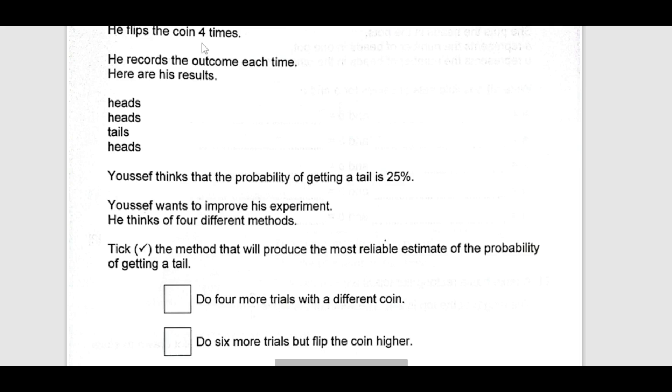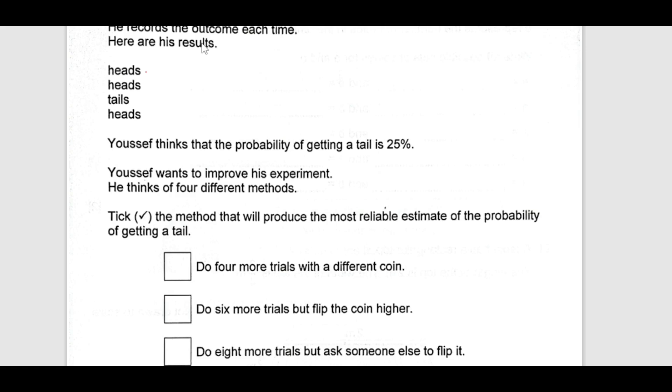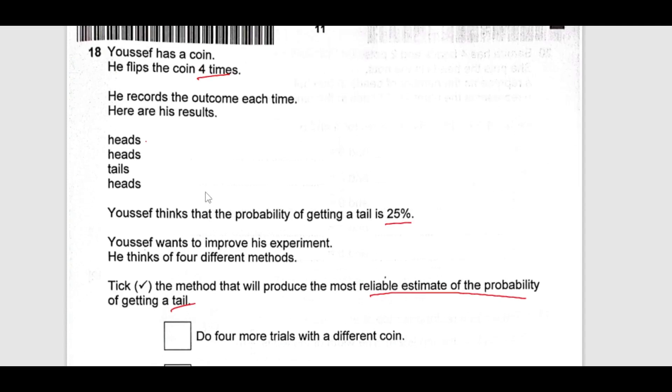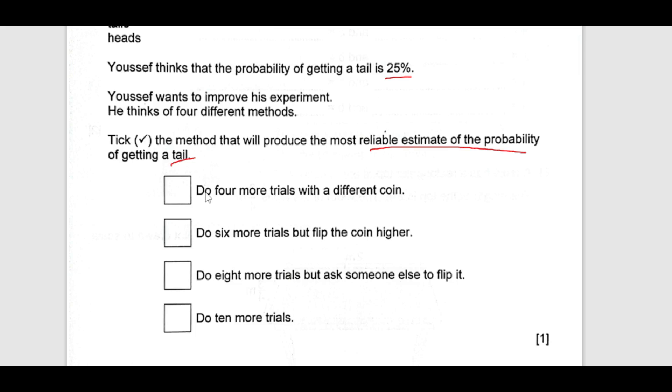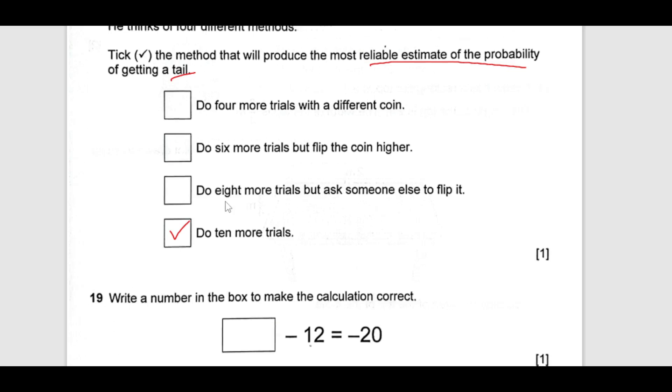Yousef has a coin. He flips the coin four times and records the outcome each time. Here are his results: heads, heads, tails, heads. Yousef thinks that the probability of getting a tail is 25%. Yousef wants to improve his experiment. He thinks of four different methods. Pick the method that will produce the most reliable estimate of the probability of getting a tail. He did this experiment four times. The question is lengthy, but it is not hard. Do not leave such questions. What is the most important thing to get a reliable estimate of the probability? The options are: do four more trials, do six more trials, do eight more trials but ask someone else to flip it. As many trials as he will do, the results will be more correct. So that's the correct answer.